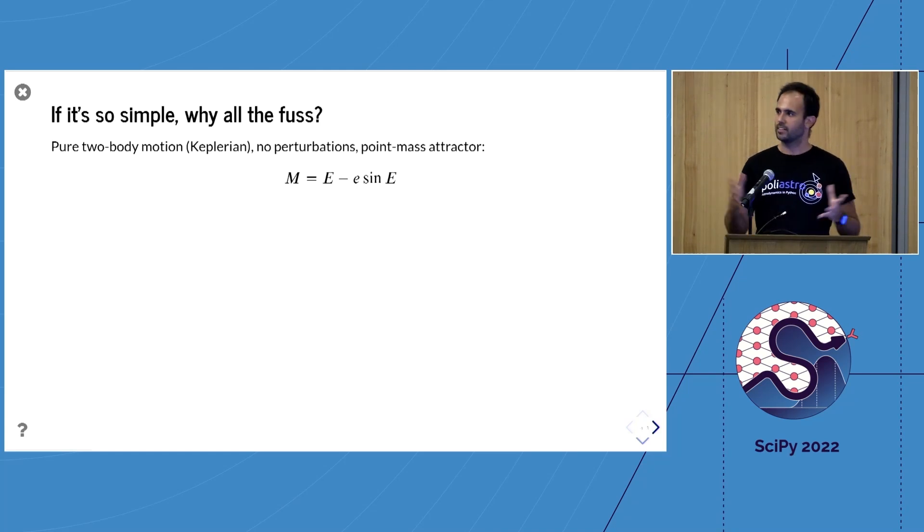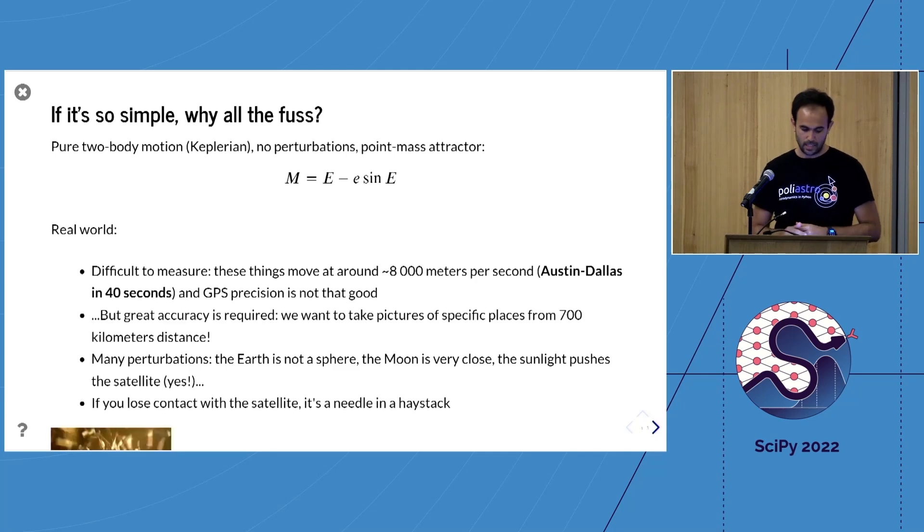If it's so simple, why is there a field of science devoted to this? For pure two-body motion or Keplerian motion after Johannes Kepler, with no perturbations and the earth is round, you can reduce everything to this equation: M = E - e sin E. This is probably the most famous transcendental equation of all times. Basically all mathematicians in modern history like Newton, Gauss, Euler, etc., have worked on this equation because you cannot solve E to find M analytically.